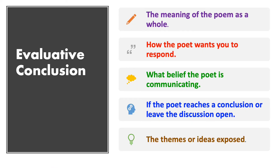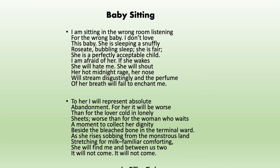After analysing all the above-mentioned aspects, you come to the final analysis — the evaluative conclusion. There you need to mention the meaning of the poem as a whole, how the poet wants you to respond, what belief the poet is communicating, or the themes or ideas exposed. Finally, note if the poet reaches a conclusion or leaves the discussion open by giving food for thought. Now let's analyse the poem 'Babysitting' written by Gillian Clarke.